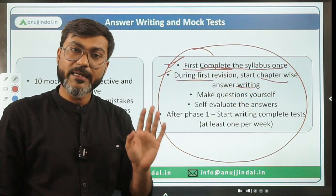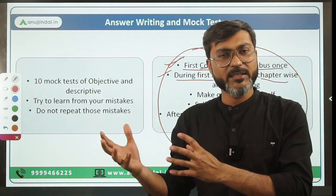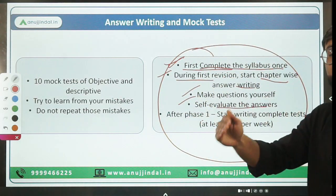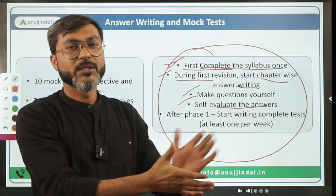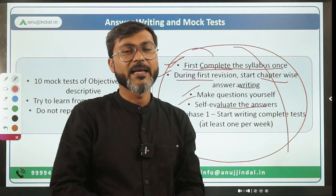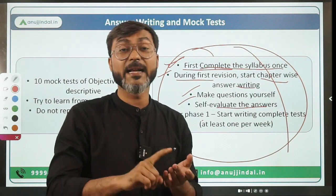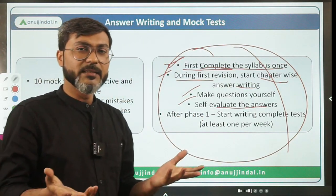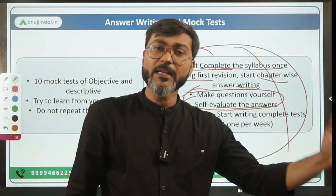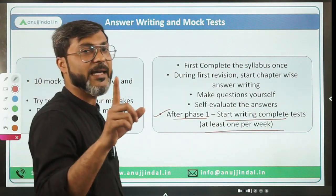During your first revision, start chapter-wise answer writing. For example, if today I studied the National Income chapter, I'll make two questions myself and write two answers on that topic. You have to make questions yourself and self-evaluate the answers, or use friends or peers to evaluate. Enrolled students don't need to worry because answer writing sessions have already started for ESI, FM, and management.